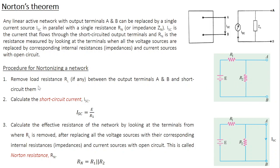First step: remove the load resistance RL if any between the output terminals A and B, and short circuit them. If you have a load resistance, remove it and connect these two points — that's what we mean by short circuit. If you don't have any load resistance, directly connect these two points and short circuit. Then calculate the short circuit current Isc.